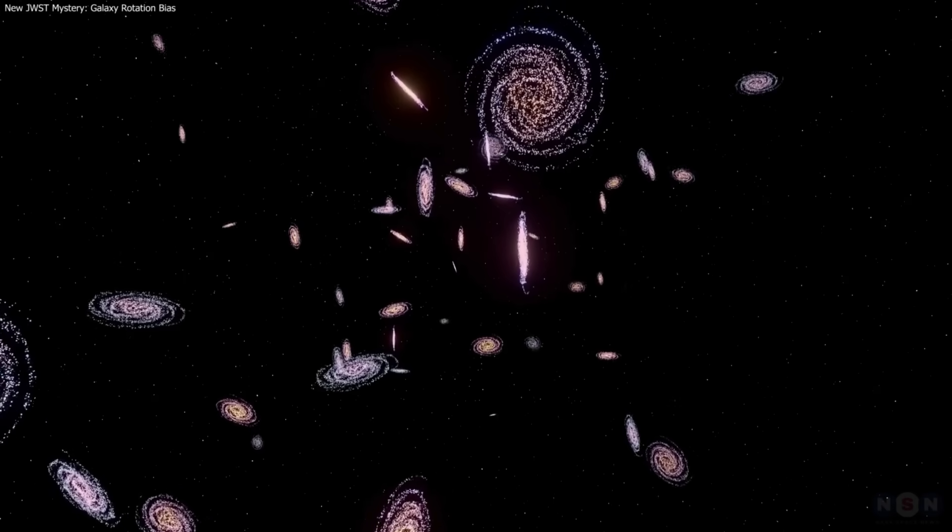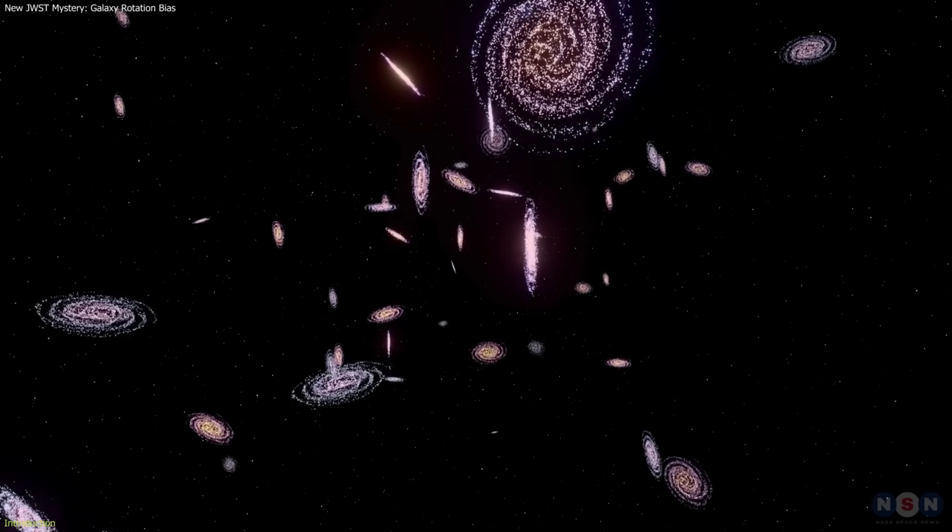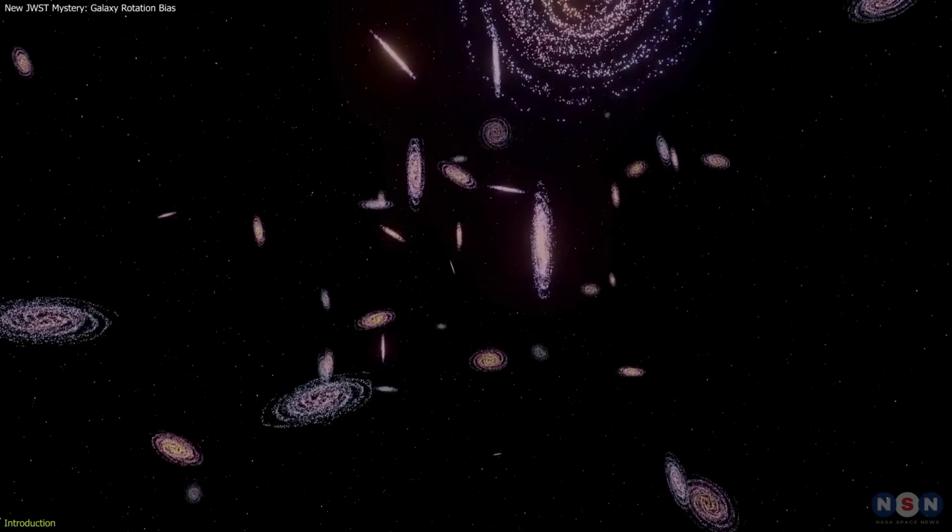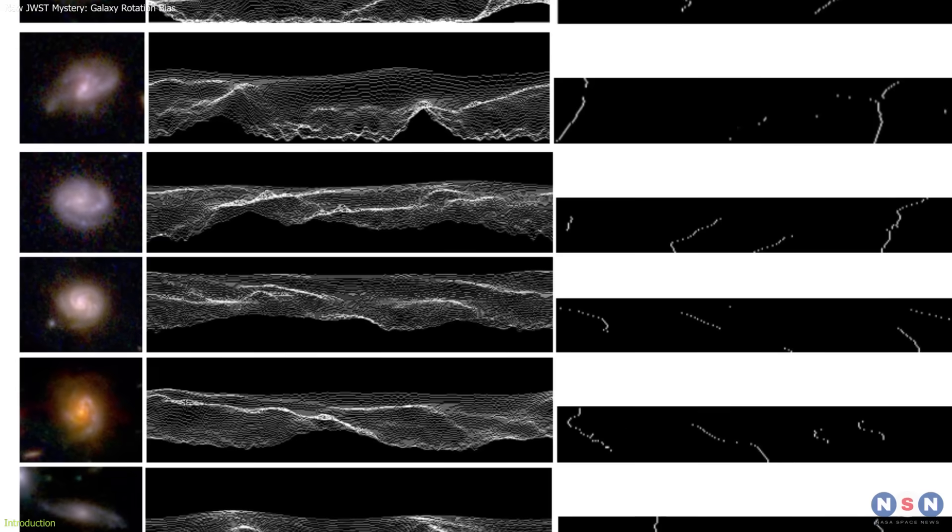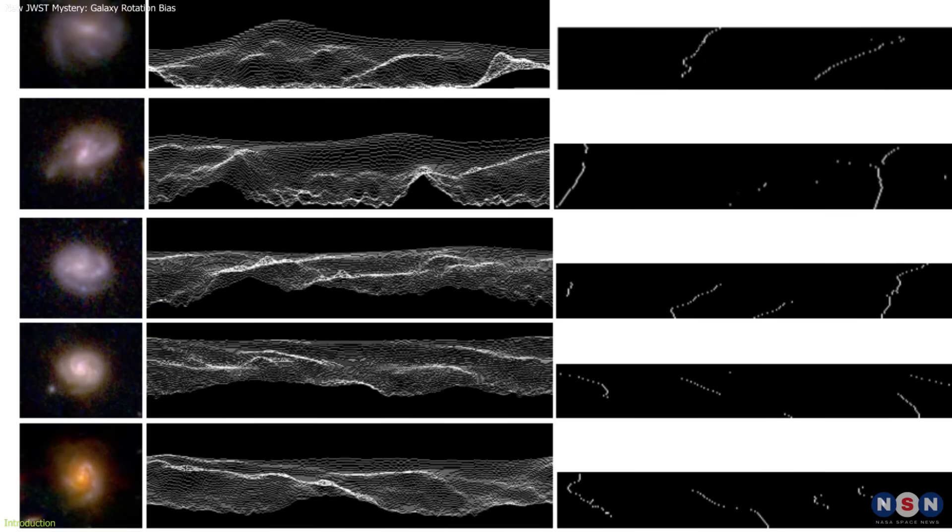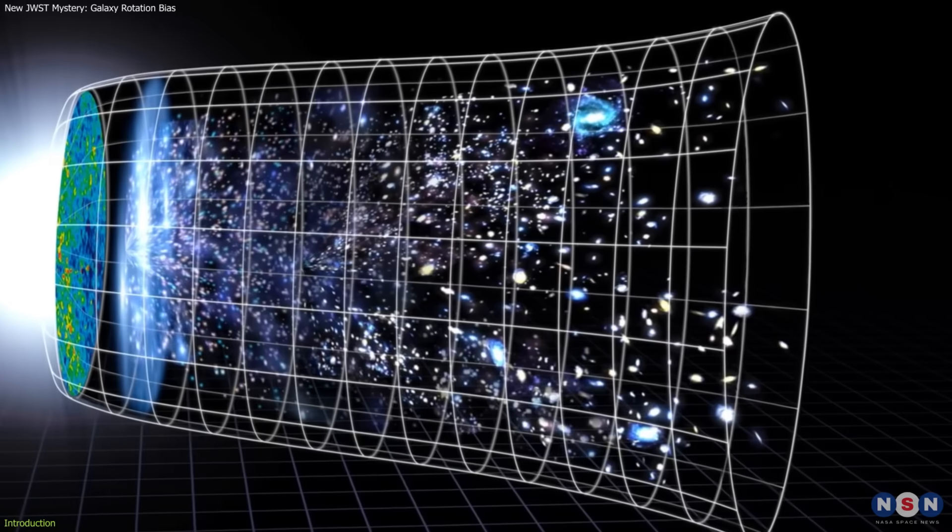Do galaxies spin randomly, or is there a hidden pattern in the universe? New results from the James Webb Space Telescope suggest more early galaxies spin one way than the other, challenging core ideas of cosmology.